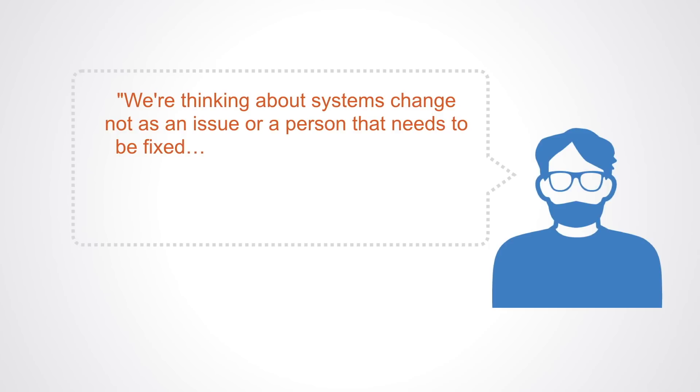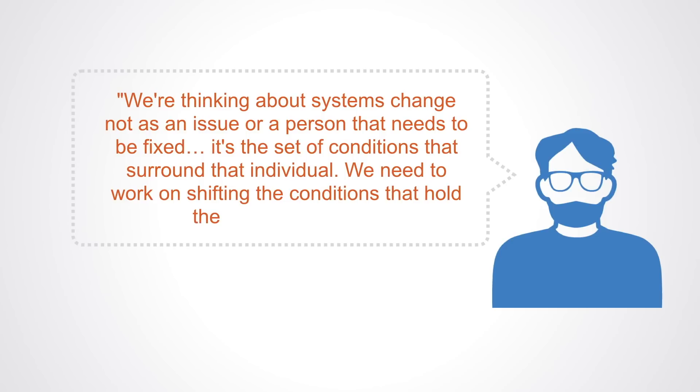John Kania, who developed the systems change practices at New Profit, talks about it in terms of shifting the system conditions when he says: We are thinking about systems change not as an issue or a person that needs to be fixed. It's the set of conditions that surround that individual. We need to work on shifting the conditions that hold the problem in place.